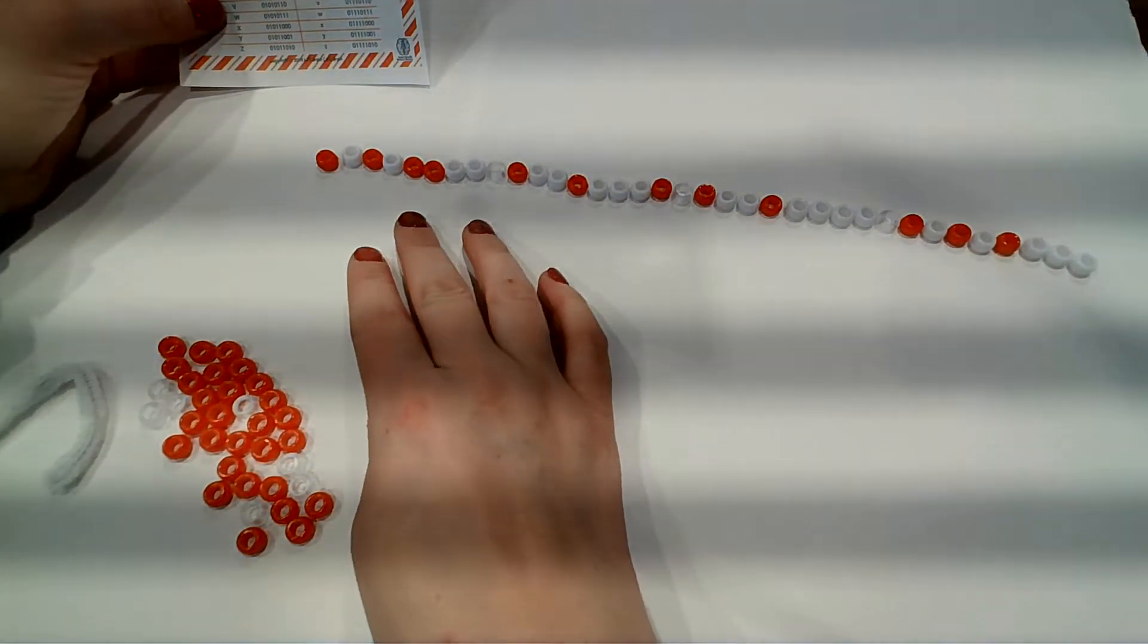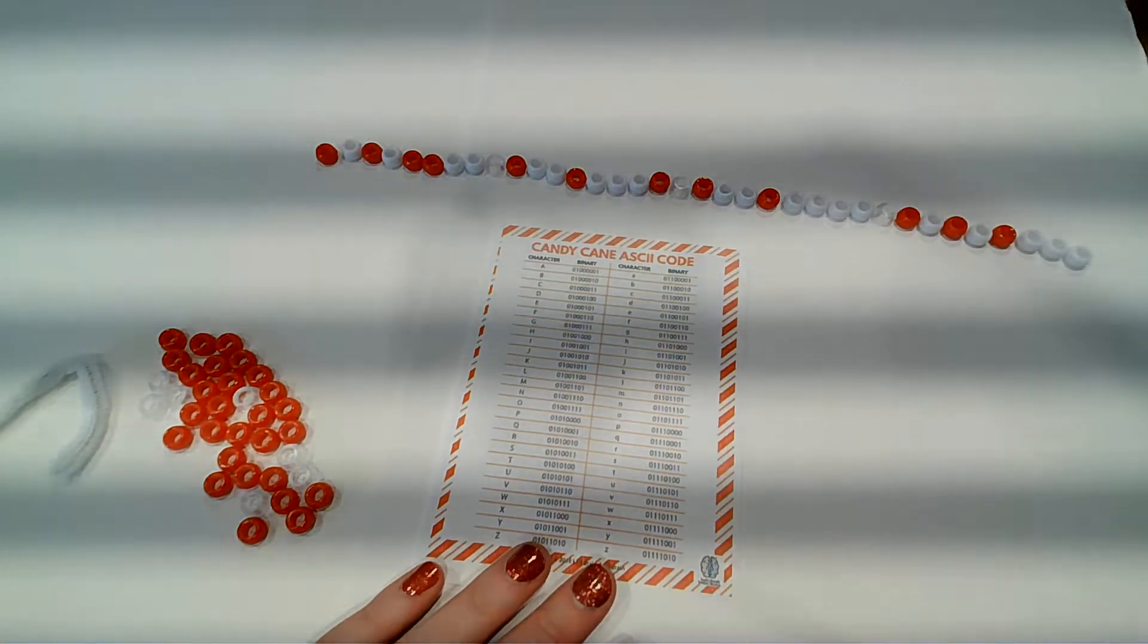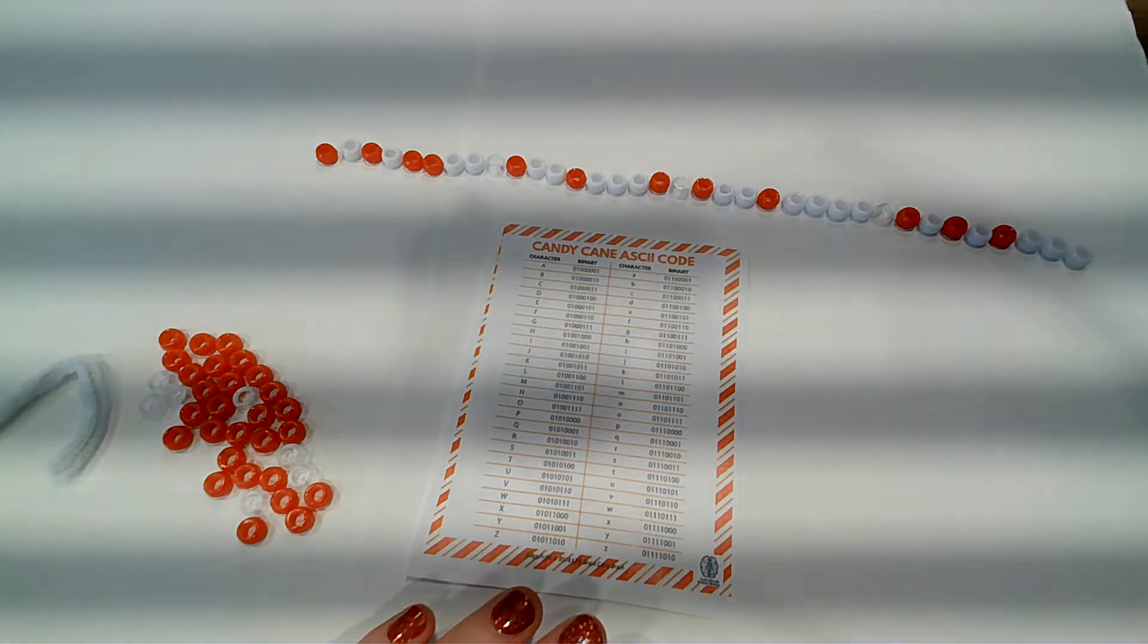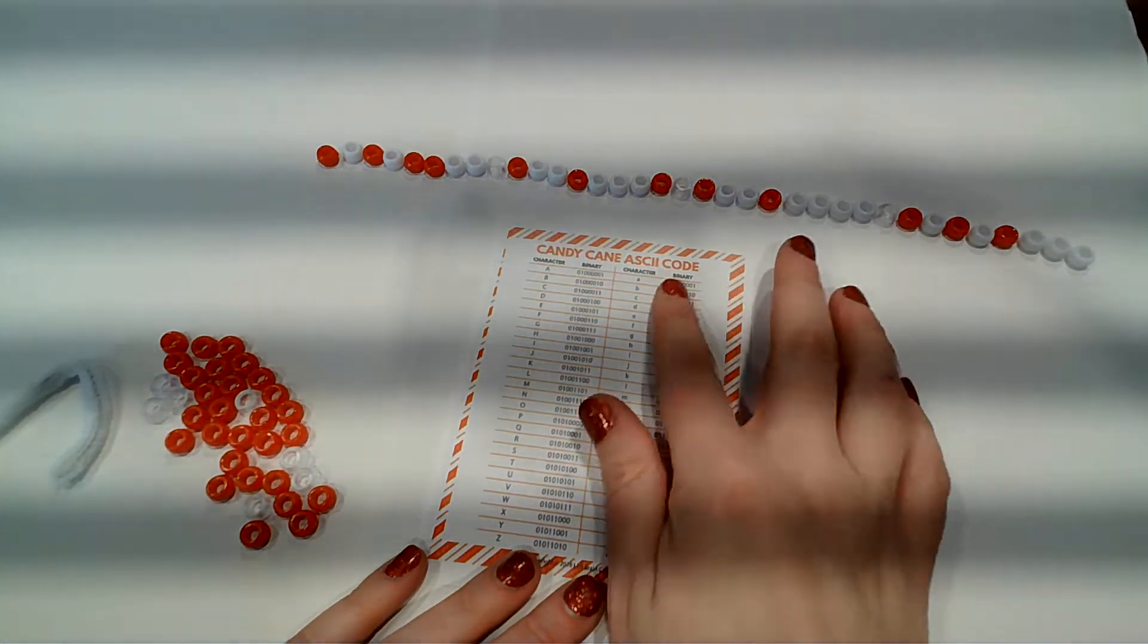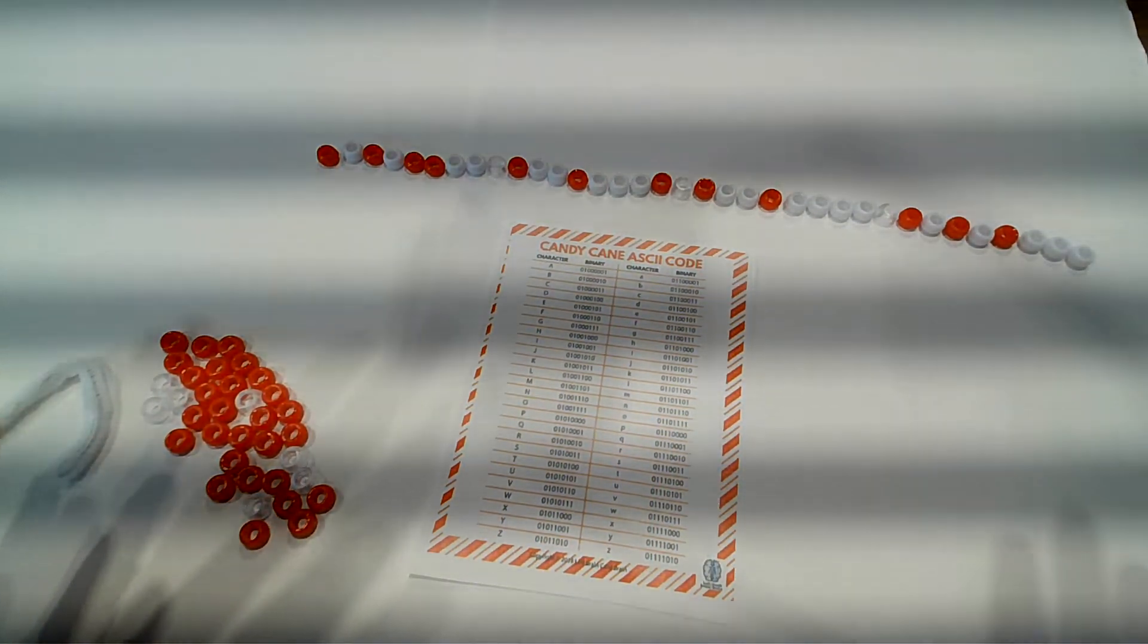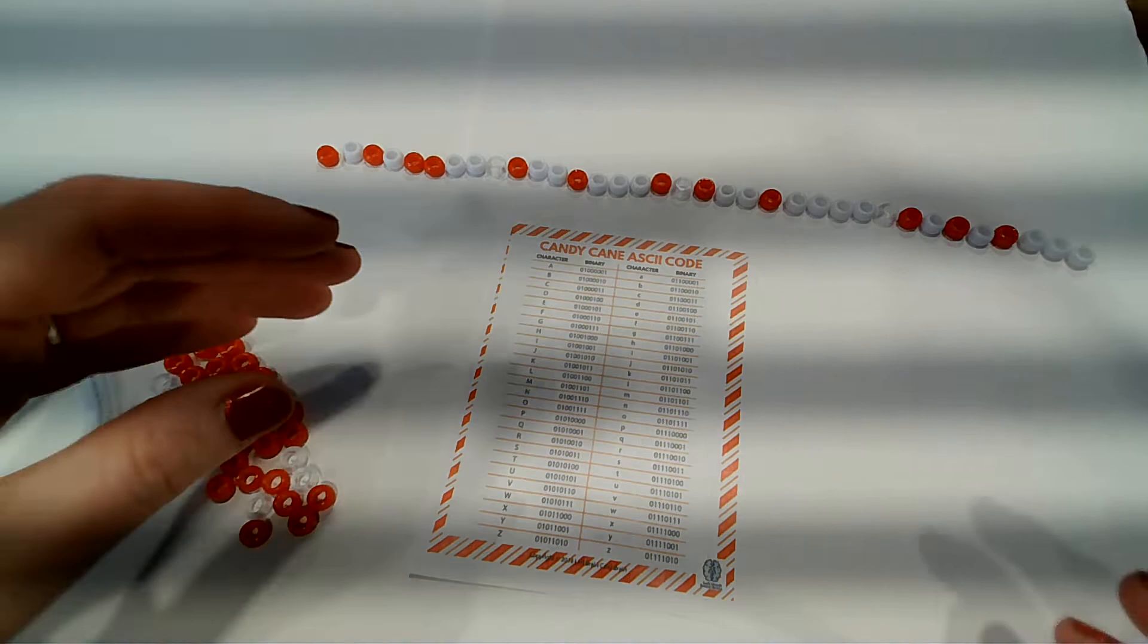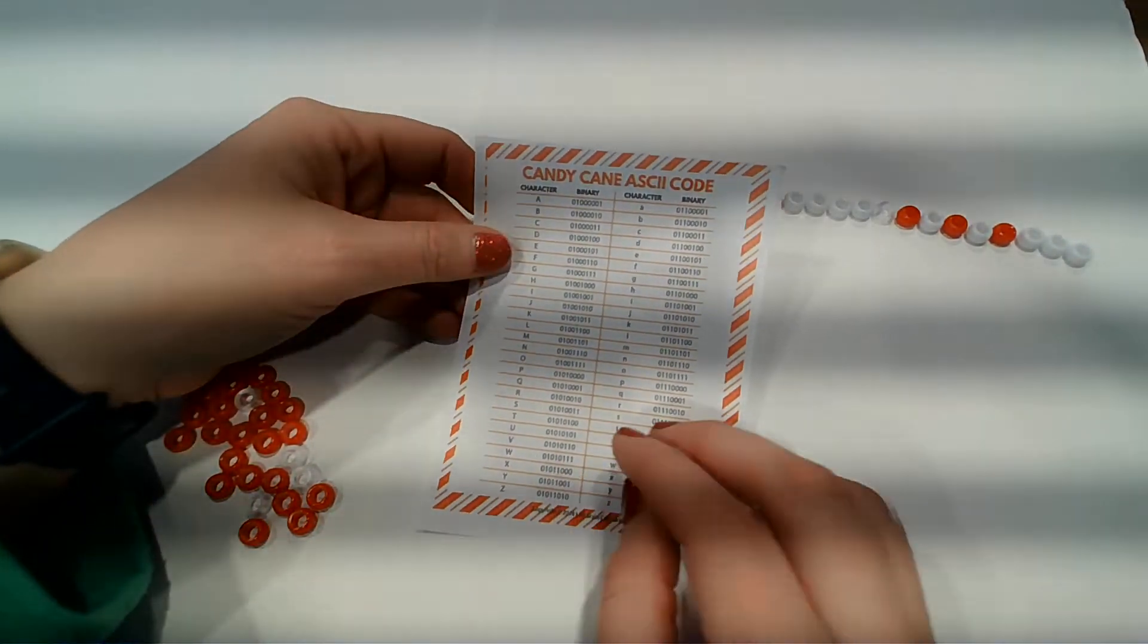So in computer world, all of these things are happening in the background. So we just see all the cool pictures and all the cool images and things like that. But in the background, every single thing has a code to it. And that's how it magically transforms into computer world.